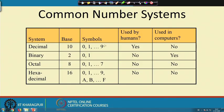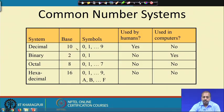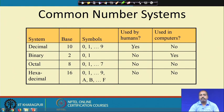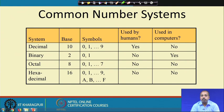Going back, we have these number systems with their base values and symbols. We can discuss whether they are used by humans or not. From our school days we are familiar with the decimal number system, so we say it is used by humans, whereas binary, octal, and hexadecimal are not typically used by humans. Conversely, decimal is not used in computers, while binary, octal, and hexadecimal number systems are used in computers.